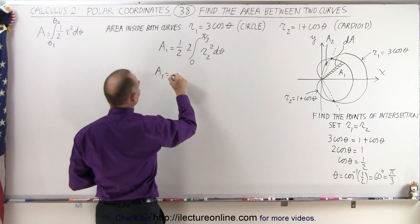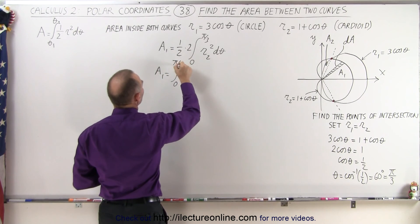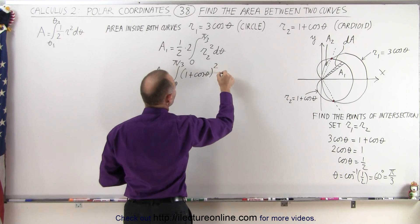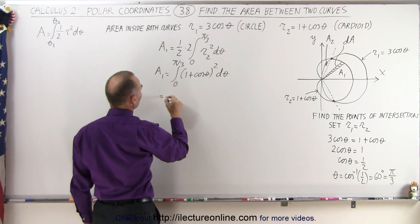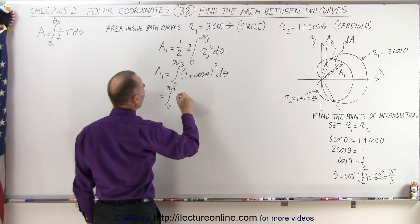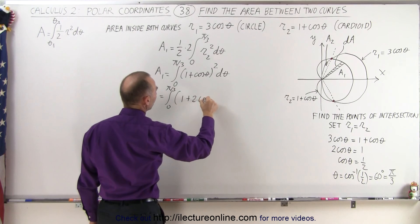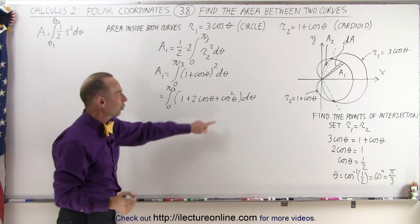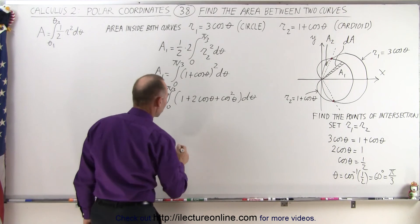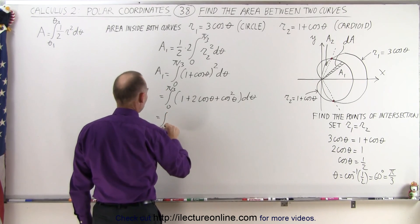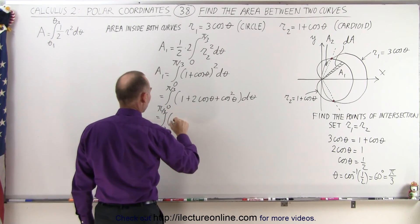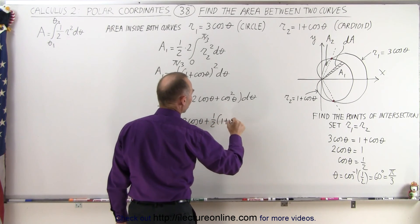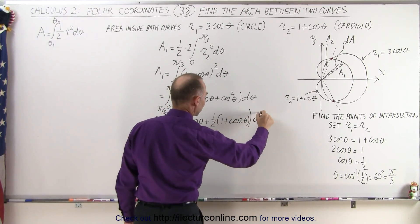So A1 is equal to the integral from 0 to pi over 3 of R2 squared — that's (1 + cosθ)² dθ — which equals the integral from 0 to pi over 3 of 1 plus 2 cosine theta plus cosine squared of theta, times d theta. Because we have cosine squared of theta, we're going to separate that into two separate integrals, using the identity: 1/2 times (1 + cos 2θ).